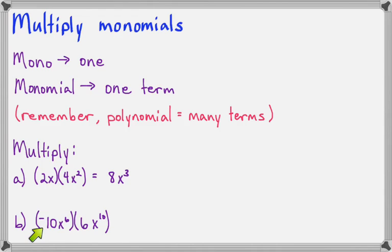Now, we have negative 10x to the sixth times 6x to the tenth. So, we multiply the coefficients together, negative 10 times positive 6 is negative 60, and we multiply the variables together, x to the sixth times x to the tenth is x to the sixteenth, because when we multiply variables, we simply add their exponents.